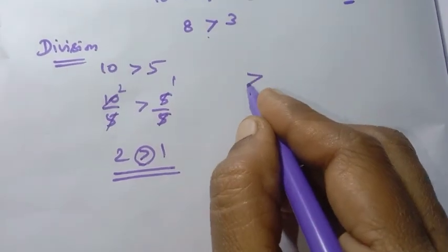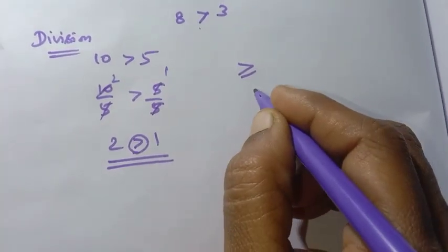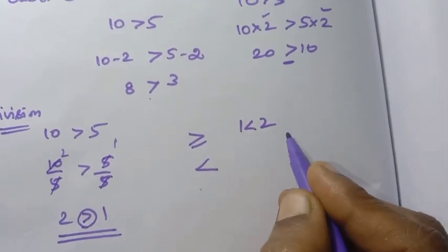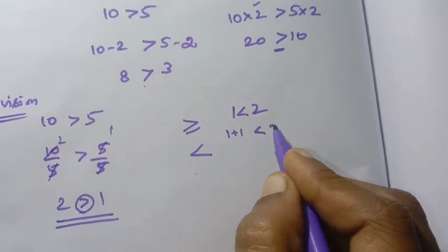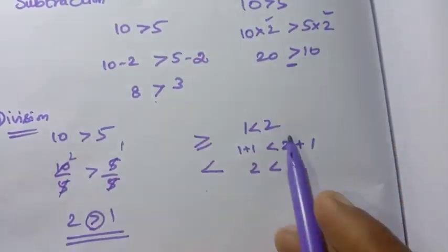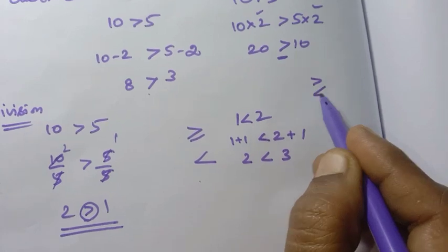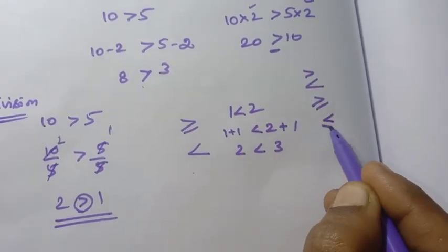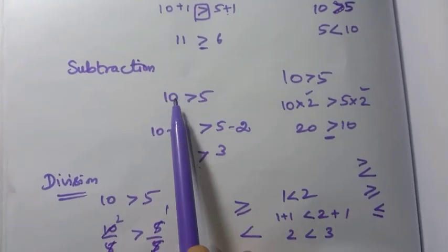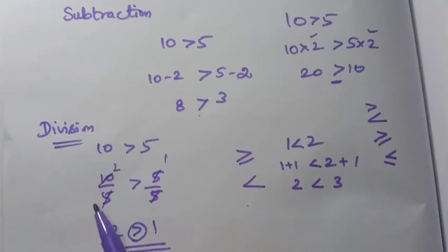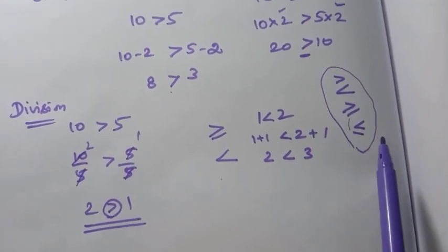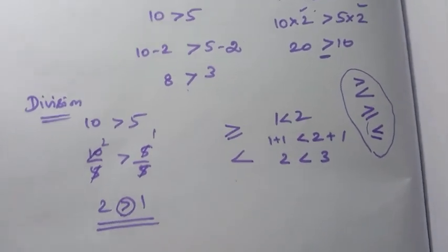So the symbols we use are: greater than, greater than or equal to, less than, less than or equal to. For addition, subtraction, multiplication by positive number, and division by positive number — all with the same number — the symbol does not change. The inequation stays the same. But for multiplication and division, it must specifically be a positive number. If it is a negative number, then the symbol will change.